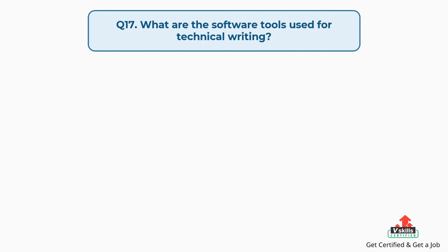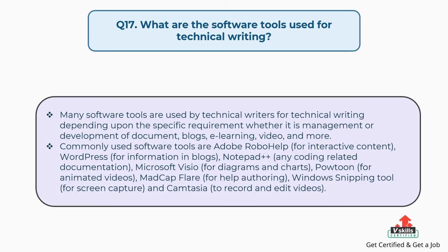Question number seventeen: what are the software tools used for technical writing? Many software tools are used depending on the specific requirement, whether management or development of documents, blogs, e-learning, video, and more. Commonly used tools are: Adobe RoboHelp for interactive content, WordPress for blogs, Notepad++ for coding-related documentation, Microsoft Visio for diagrams and charts, Powtoon for animated videos, Madcap Flare for help authoring, Windows Snipping Tool for screen capture, and Camtasia to record and edit videos.